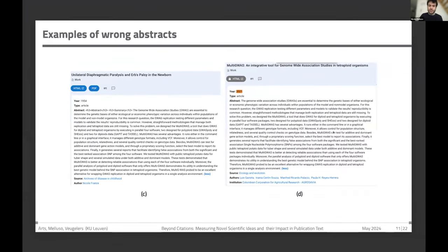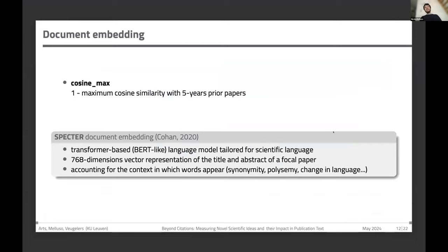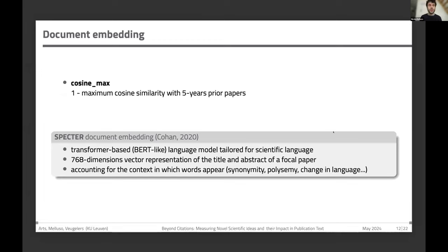We also see very good news: we tried to develop a measure of novelty by creating embeddings of all papers in OpenAlex using the SPECTER model, calculating the distance of each paper to all prior papers published in the five years prior. The more distant a paper's content is from all prior papers, the higher the novelty of that paper — this may serve as a proxy for whether the paper introduces new scientific ideas.